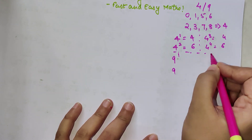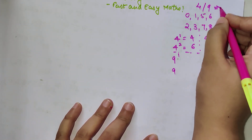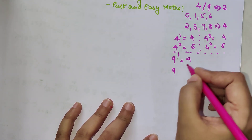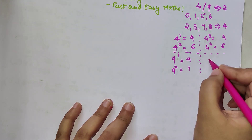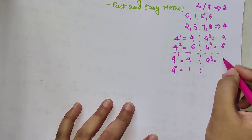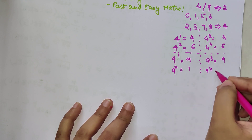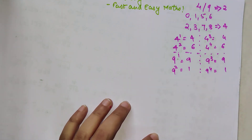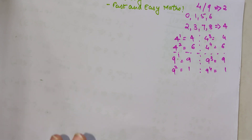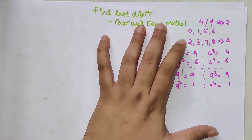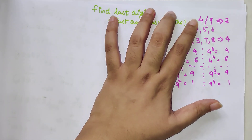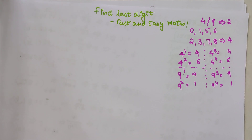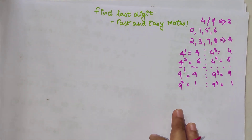For 9, the power cycle is also two. 9 raised to 1 is 9. 9 raised to 2 gives 81, so last digit is 1. 9 raised to 3 gives last digit 9 again. 9 raised to 4 gives last digit 1 again. So for both 4 and 9, unlike the cycle of four for other digits, here the power cycle is just two.